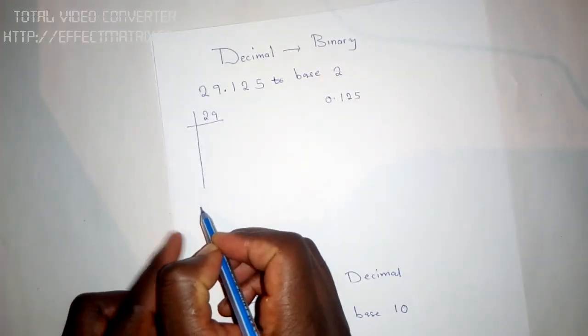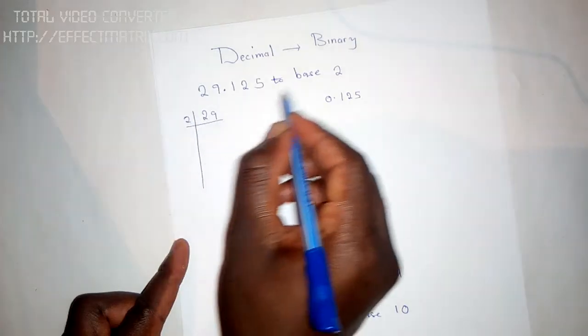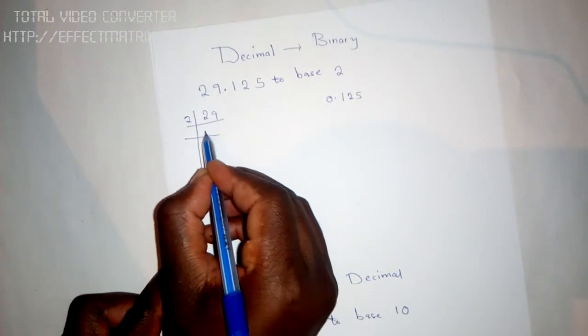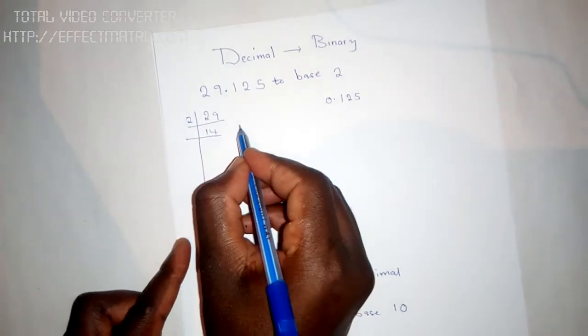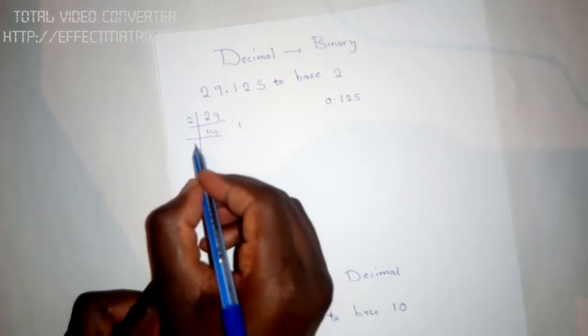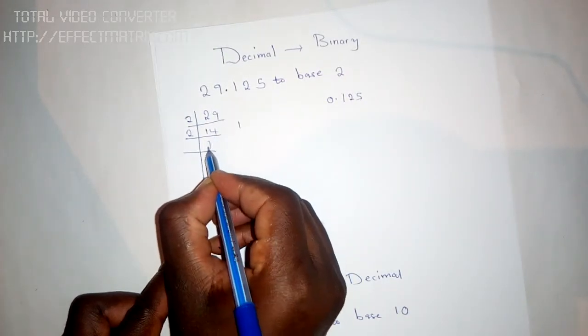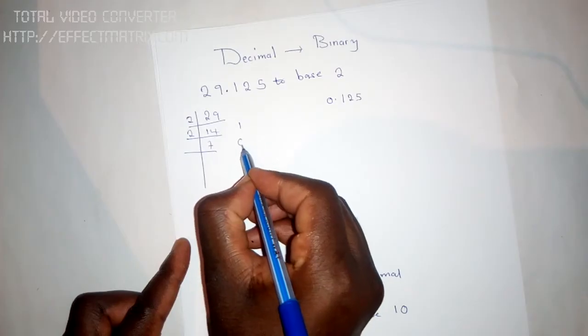Like this, and then you say 2, because you're taking it to base 2. So 2 into 29 is 14 remainder 1, and then 2 into 14 is 7 remainder 0.